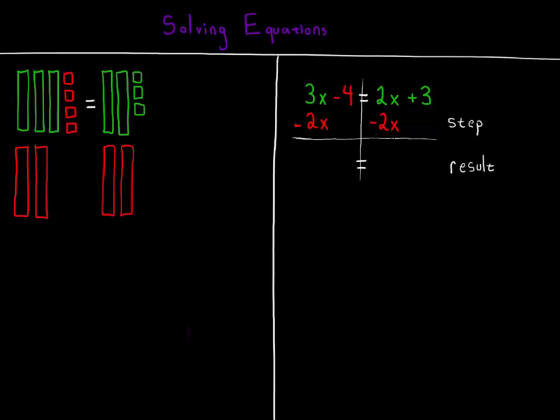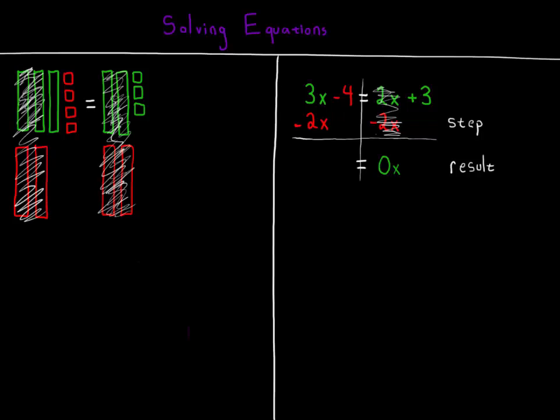The positive and negative 2x cancel one another to make a zero pair. On the right-hand side of the equation, on the left-hand side, two out of the three x's cancel, leaving a single remaining x. The negative four units on the left and positive three units on the right haven't been altered. So in the equation, they come straight down and are rewritten.